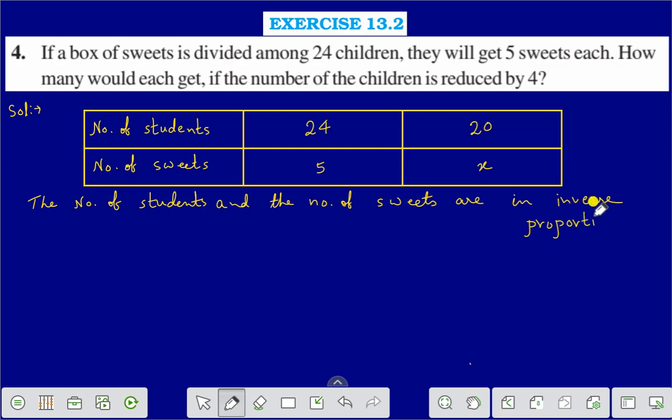Since they are in inverse proportion, we can say that 24 into 5 is equal to 20 into x. Therefore, the value of x is equal to 24 into 5 divided by 20.